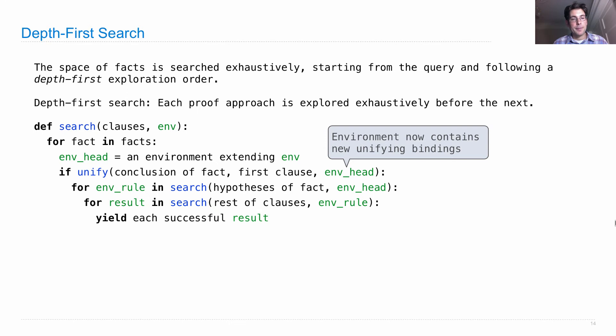So then we yield each successful result. What's the result? Well, it's just a binding from variables to values or an environment that we've built up incrementally by trying to satisfy all the clauses that we started with using some facts that we have. So we yield this, which means we have multiple different alternatives. And that's the whole story.